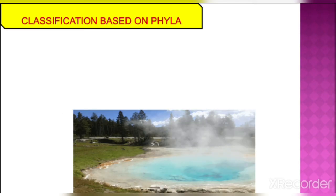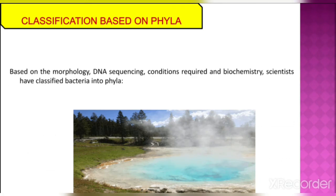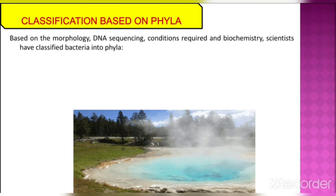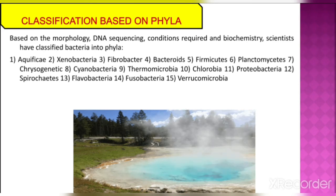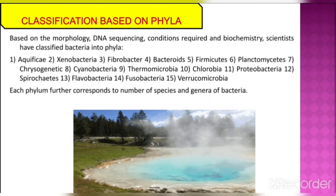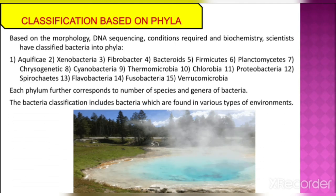Classification of microorganisms — bacteria — based on phyla. Based on morphology, DNA sequencing, conditions required, and biochemistry, scientists have classified bacteria into phyla: Aquificae, Genobacteria, Fibrobacteria, Bacteroidetes, Firmicutes, Planctomycetes, Chloroflexi, Cyanobacteria, Thermomicrobia, Chlorobia, Proteobacteria, Spirochaetes, Flavobacteria, Fusobacteria, Verrucomicrobia. Each phylum further corresponds to a number of species and genera. Bacterial classification includes bacteria found in various environments such as high pH, low pH, high temperature, and low temperature environments.